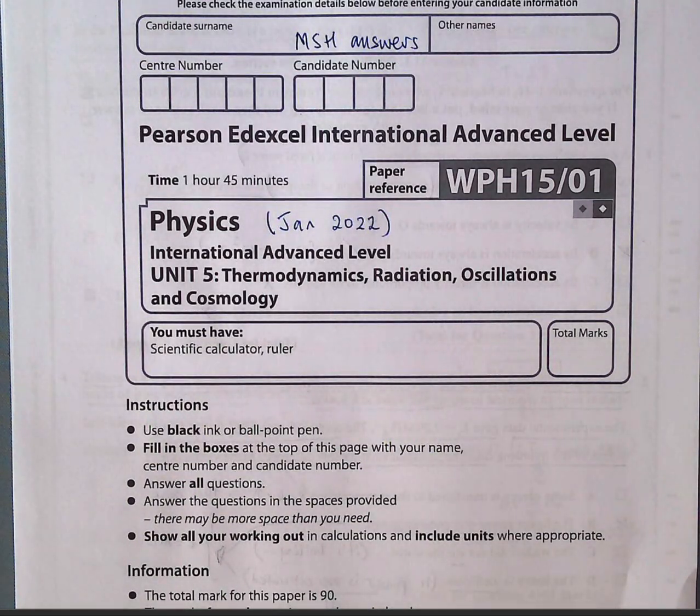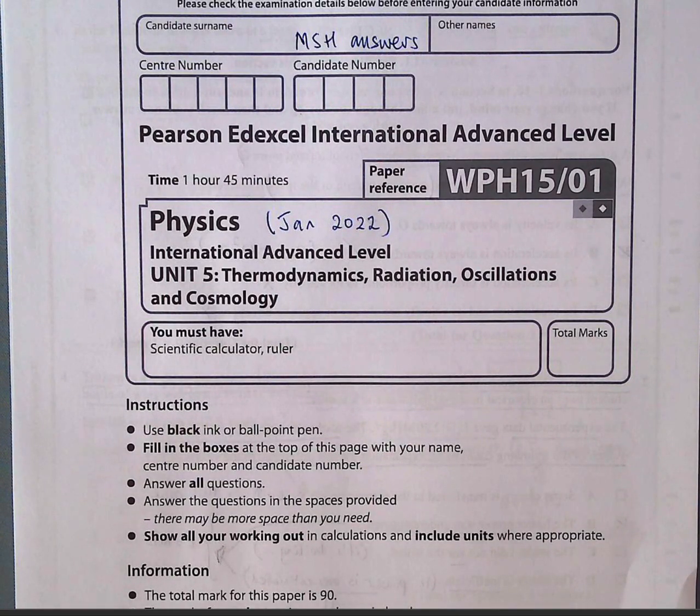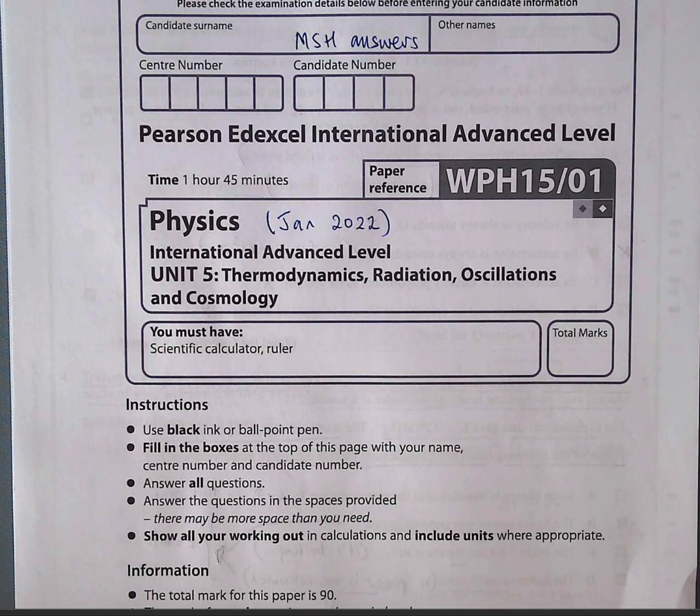Today's paper that we're going through is from January 2022. It's the Physics A-Level International Edexcel exam, which is Modular Unit 5 on Thermodynamics, Radiation, Oscillations and Cosmology. These units are normally examined in the second half of the year for Year 13 students doing their A-Level.